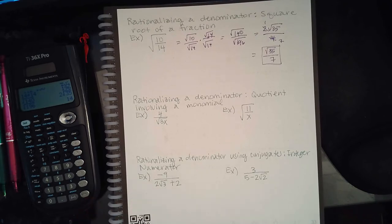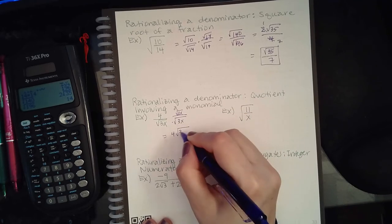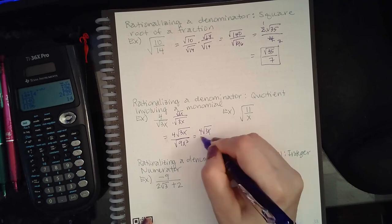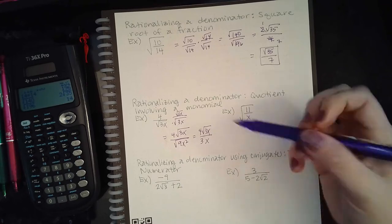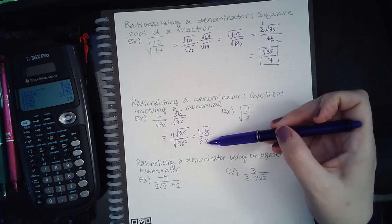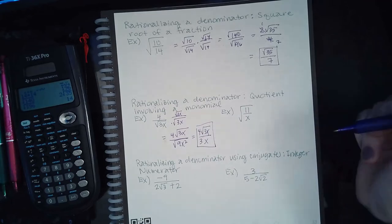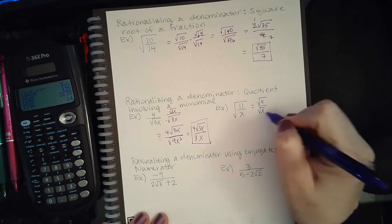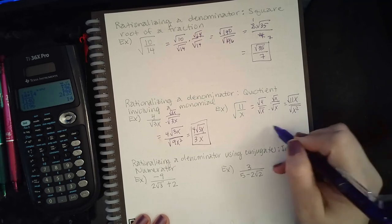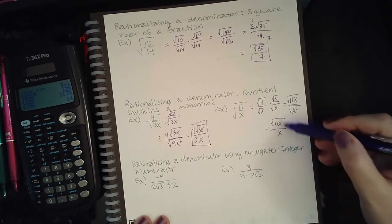Same idea here: whatever's at the bottom, multiply it top and bottom. 4 is on the outside, 3x is on the inside — they need to stay that way. Inside times inside gives me 9x squared, so the 9 comes out as a 3 and x squared comes out as an x. You cannot reduce terms inside a square root with terms outside. 4 and 3 do not reduce, so that's the final answer. If you separate the fraction first, then multiply top and bottom by the denominator's square root: square root of 11x over square root of x squared. Square root of x squared is just x, but that x is outside the radical while the other is inside, so you cannot reduce them.